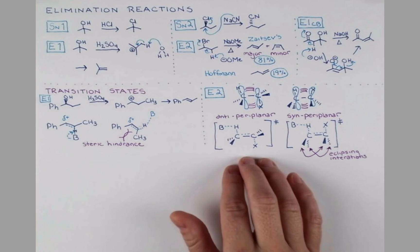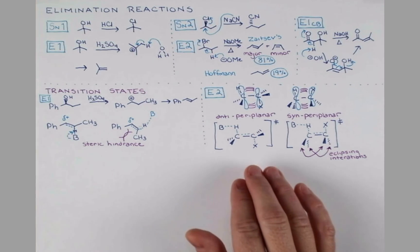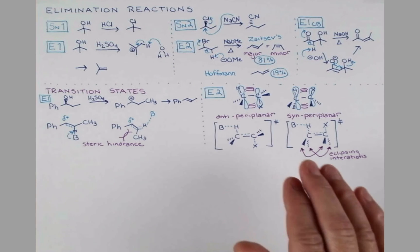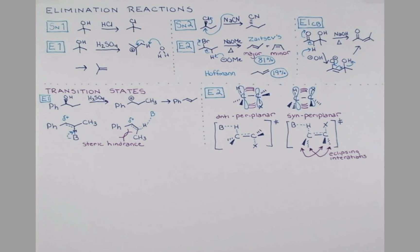So, although E2 eliminations can proceed by the syn-periplanar elimination transition state, the anti-periplanar is much more favored since these groups are actually staggered in the Newman projection. Because this anti-periplanar geometry is so important in E2 reactions, being able to see this is important for predicting the products you'll get from reactions. Let's look at two examples. We'll apply a Newman projection and a chair to make sure that you can deal with these types of problems when you see them.